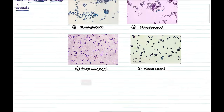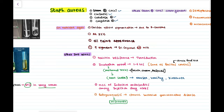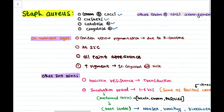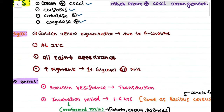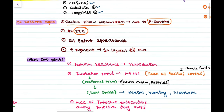Important features of Staphylococcus aureus on nutrient agar: it gives golden yellow pigmentation due to beta-carotene at 22 degrees centigrade, appearing as an oil paint appearance. Pigment production increases when 1% glycerol or milk is added.